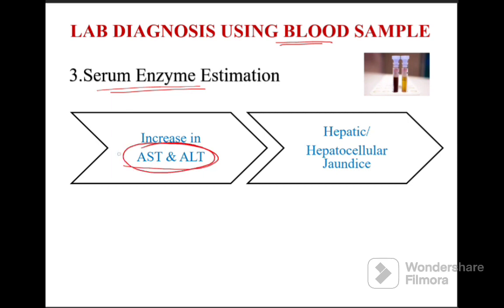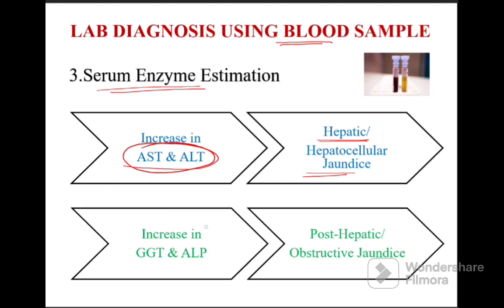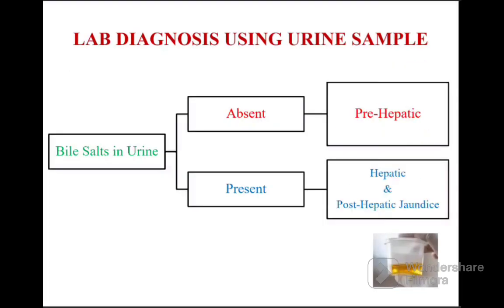Another test for diagnosing jaundice using blood sample is serum enzyme estimation. An increase in AST and ALT indicates the cause of jaundice as hepatic or hepatocellular, whereas an increase in GGT and ALP indicates the cause as post-hepatic or obstructive jaundice.